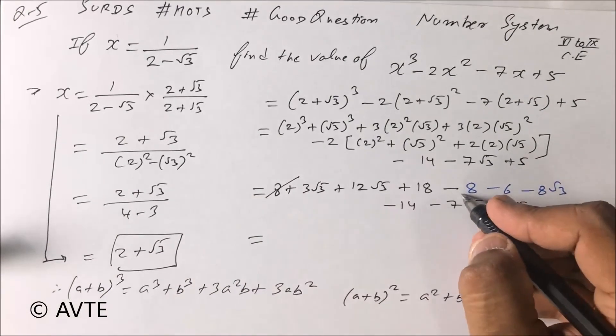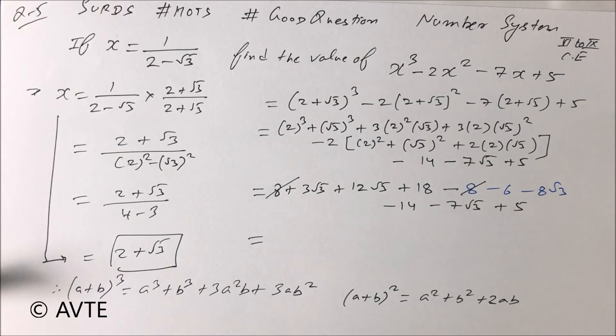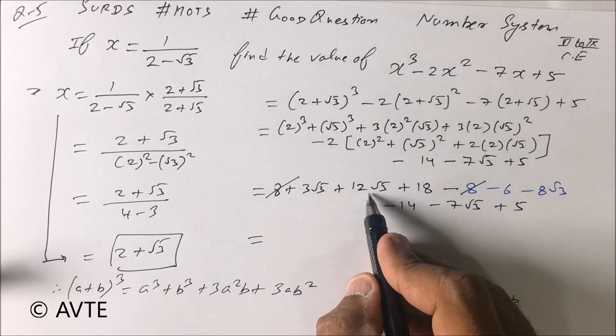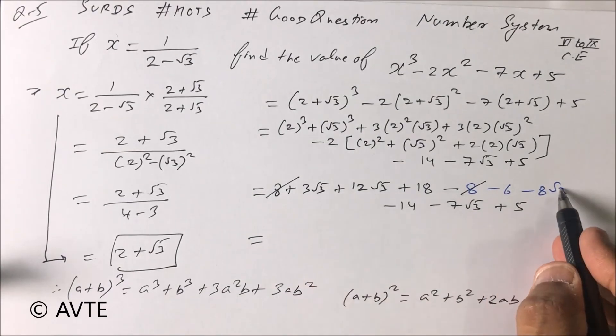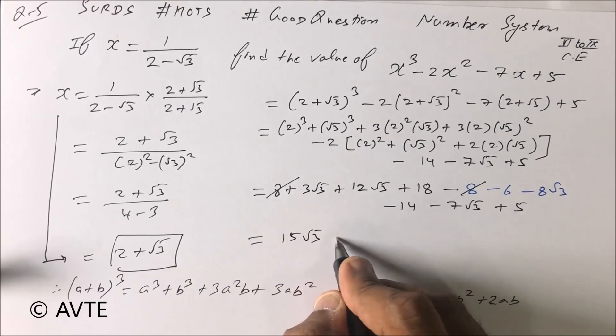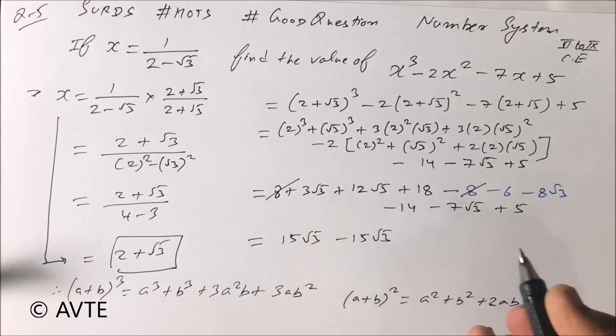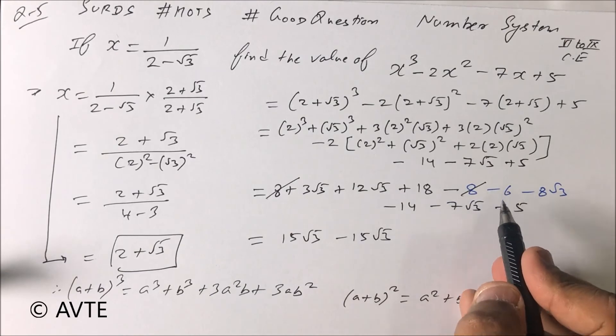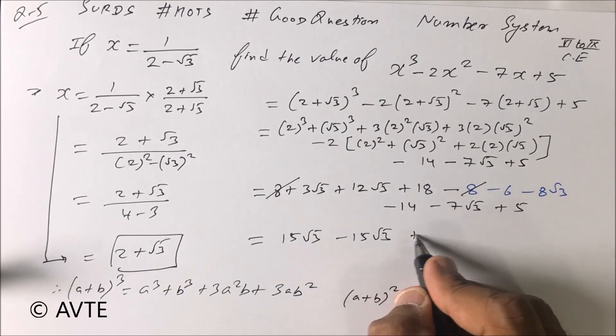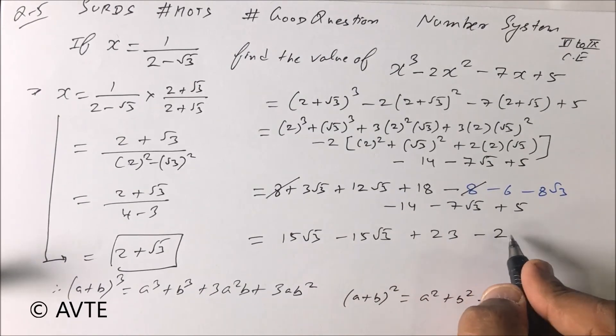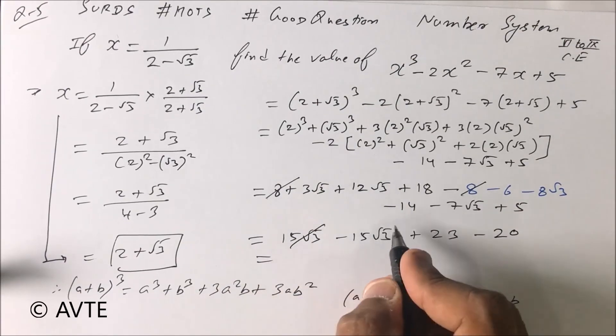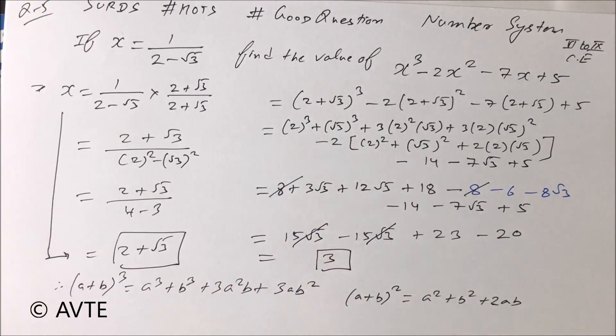Okay, this is 15 root 3 and this is 15 root 3. 15 root 3 minus 15 root 3, that is 18 minus 6, 18 plus 5 is 23 minus 20. Your answer is 3.